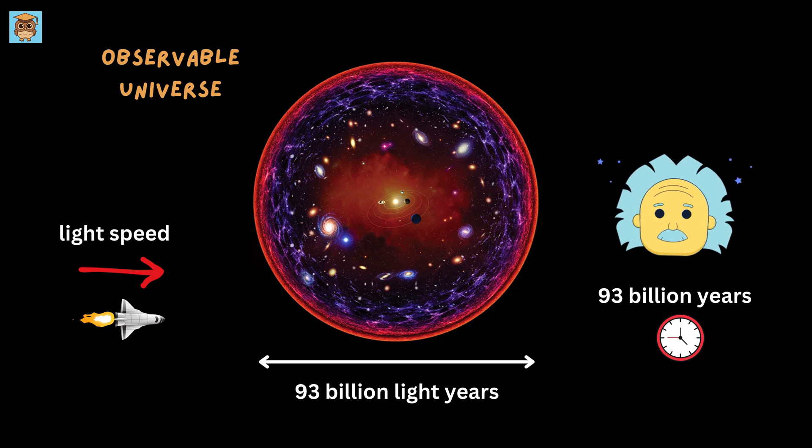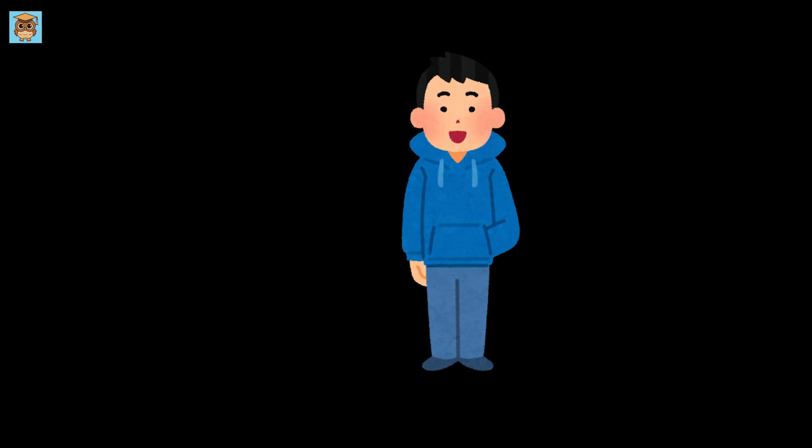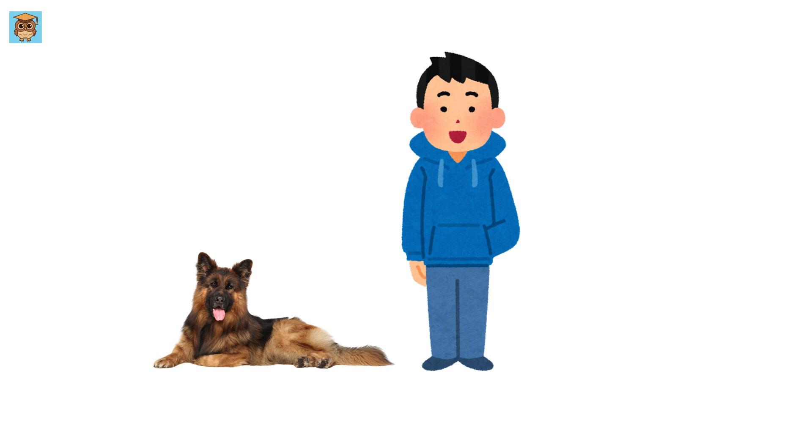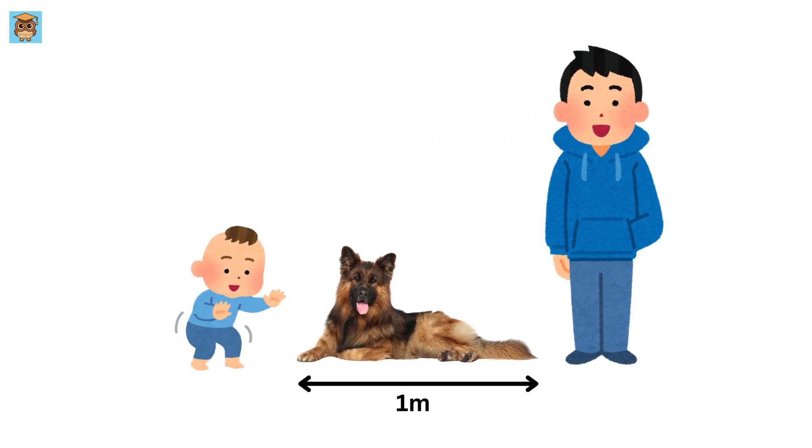All right, that was huge. But what about the smallest things? It's time to zoom in. A dog, like a Labrador or a German Shepherd, is usually around 1 meter long. That means it's smaller than you, but bigger than a toddler.